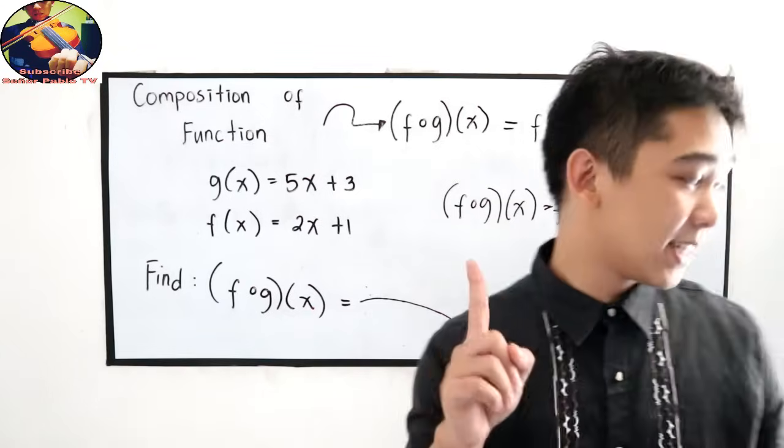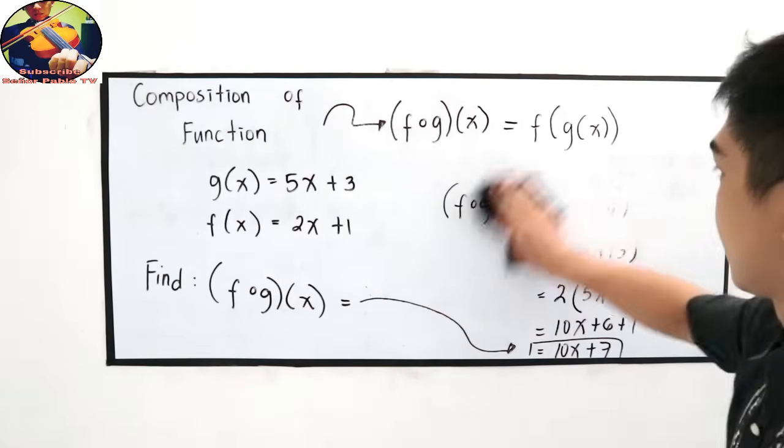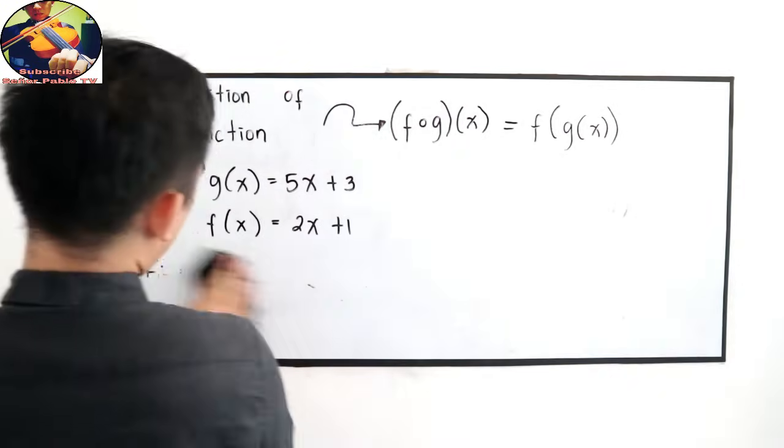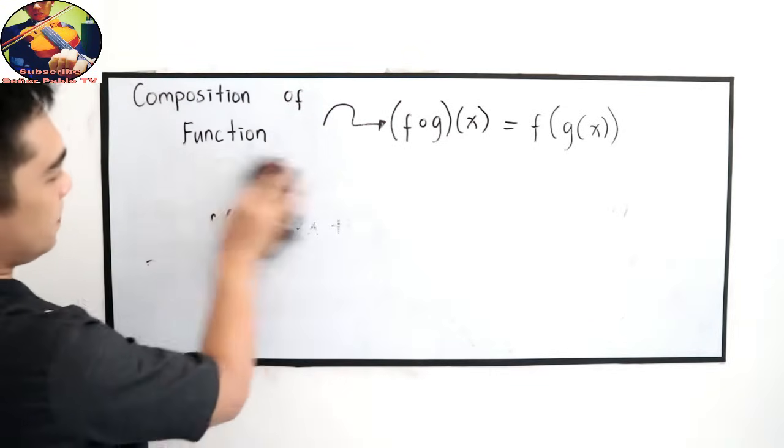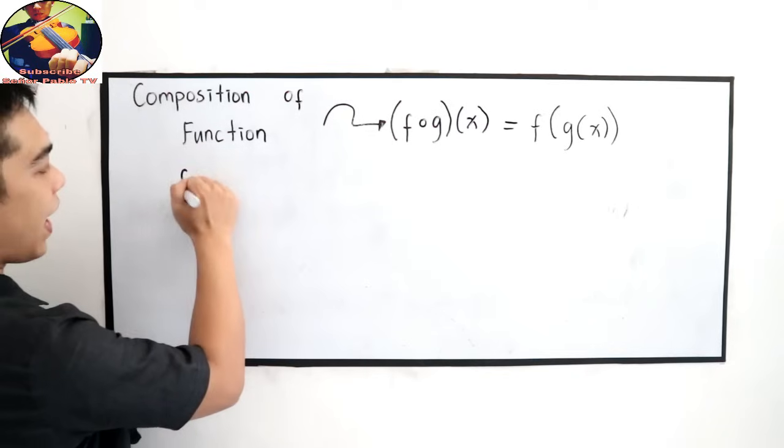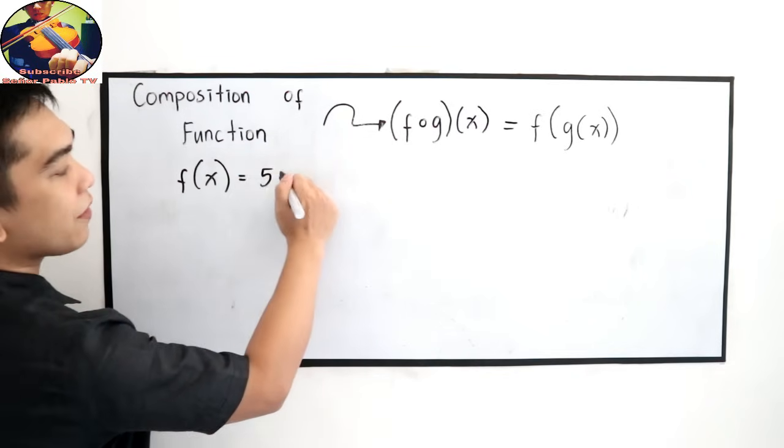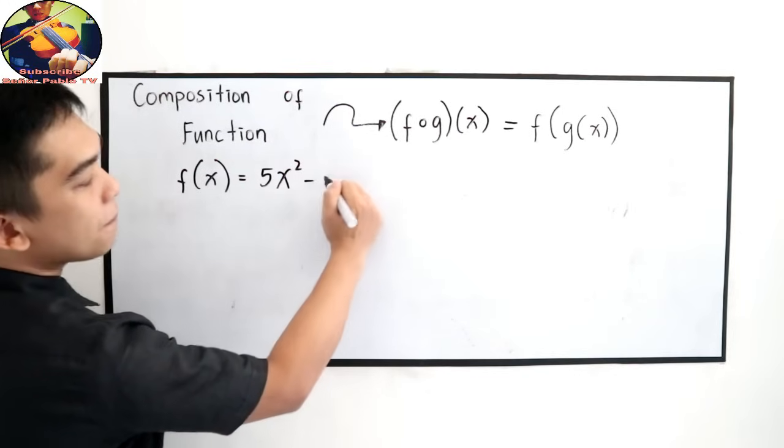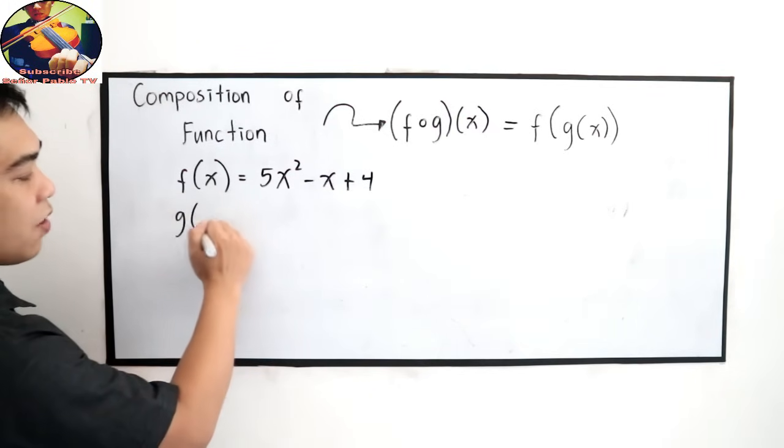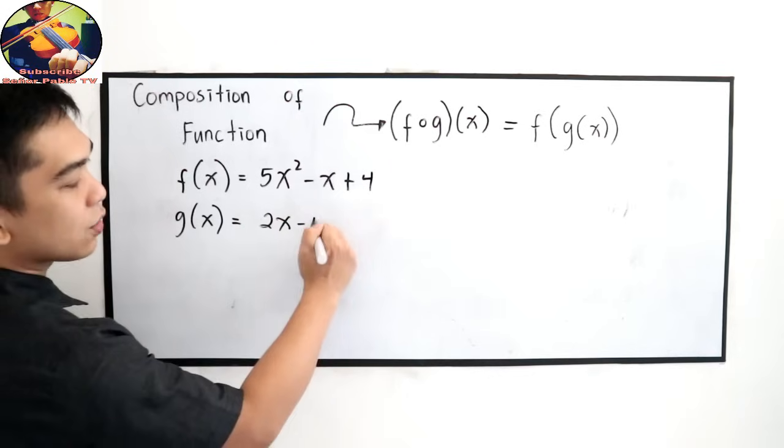Let's try another example. Let's say we have f of x is equal to 5x squared minus x plus 4. Then g of x is equal to 2x minus 1.